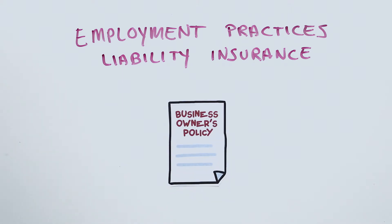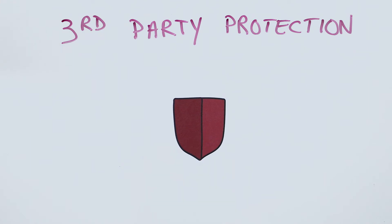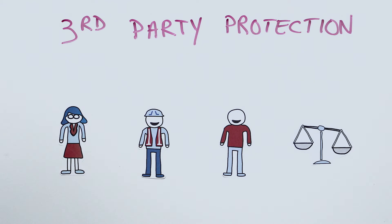It can be included with your business owner's policy. Some policies may also include third-party protection to cover you if a vendor, service provider, or customer sues for discrimination or harassment.